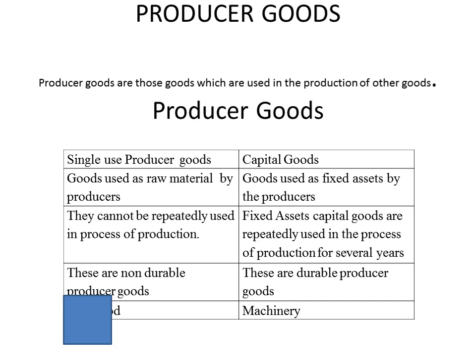What are single-use producer goods? They are intermediate goods. These goods are used as raw materials by producers. They cannot be repeatedly used in the process of production. These goods are non-durable producer goods, like wood. Wood cannot be used again and again; it is used as raw material.